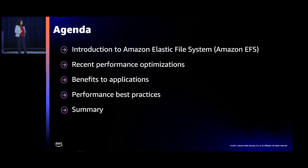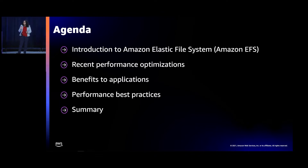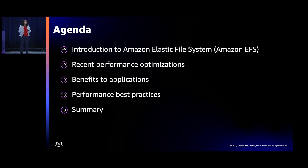In the spirit of jumping right in, we'll begin the session with an introduction to what Amazon Elastic File System is. Next, we'll talk about the recent performance optimizations that we've launched with Amazon Elastic File System, both as publicly launched AWS features and also features that we launched silently to customers. Then we'll talk about a number of applications and how they will be benefiting from these performance enhancements. Then we'll take a small segue into performance best practices, and finally I'll summarize.